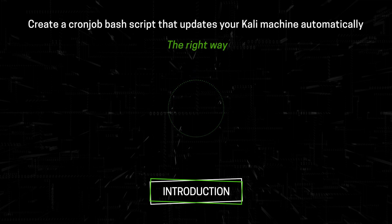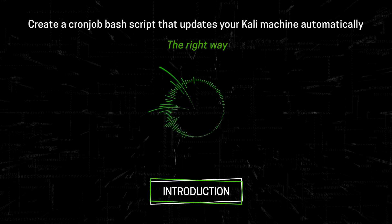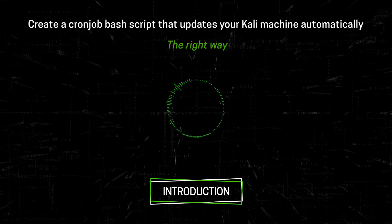We will also show you how to let the script log everything so you can trace back for any issues, and create a cron job so it can automatically run at a specific time after your machine boots up, all in a cool rainbow color. This episode will let you learn how to automate your own bash script.